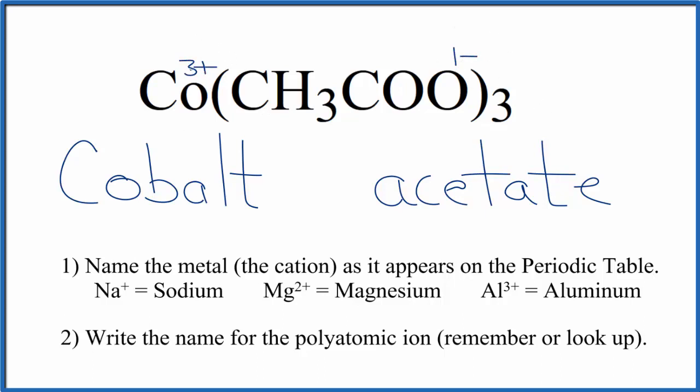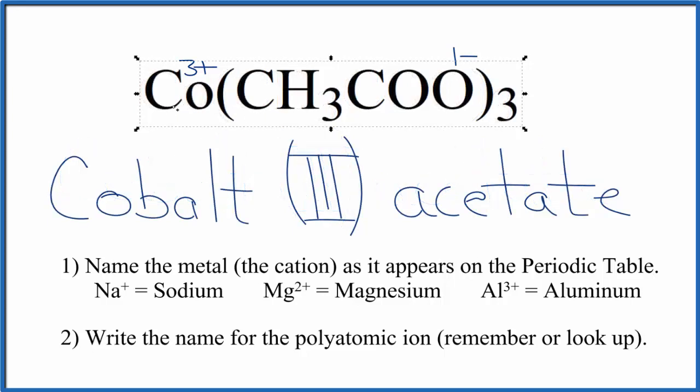So what we're going to do is this three plus on the cobalt, we're going to write a Roman numeral three here, put it in parentheses, and the name for Co(CH3COO)3 is cobalt three acetate. And the three here, this Roman numeral three, that's because of this three plus up here with the cobalt.